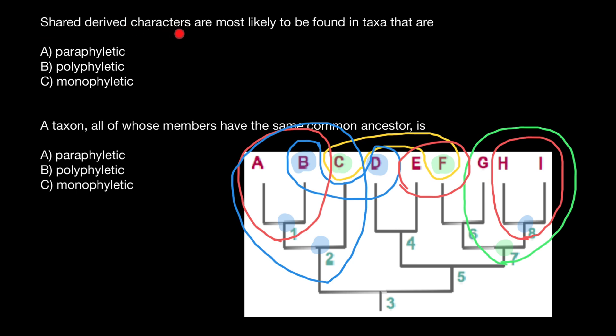Shared derived characteristics are most likely to be found in the taxa that are, and of course, it's going to be monophyletic group, when two species would be closely related through recent common ancestor. So answer B.